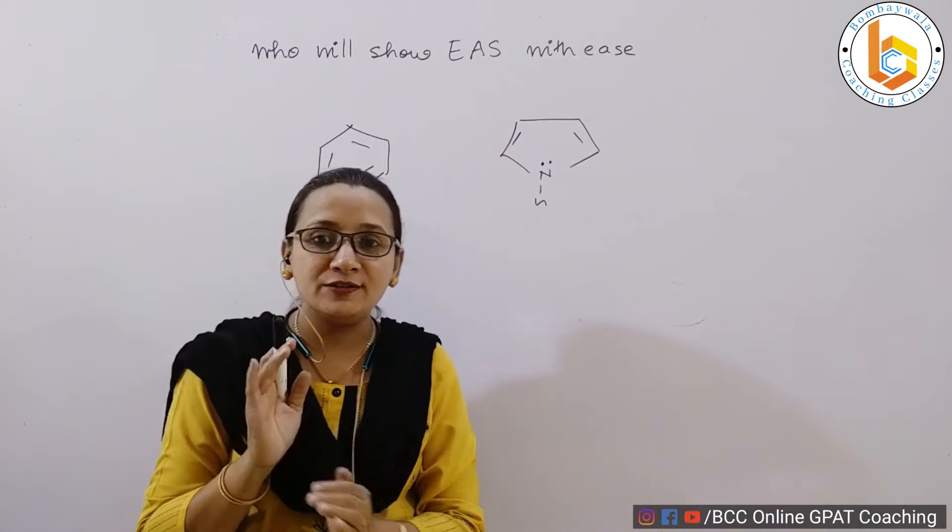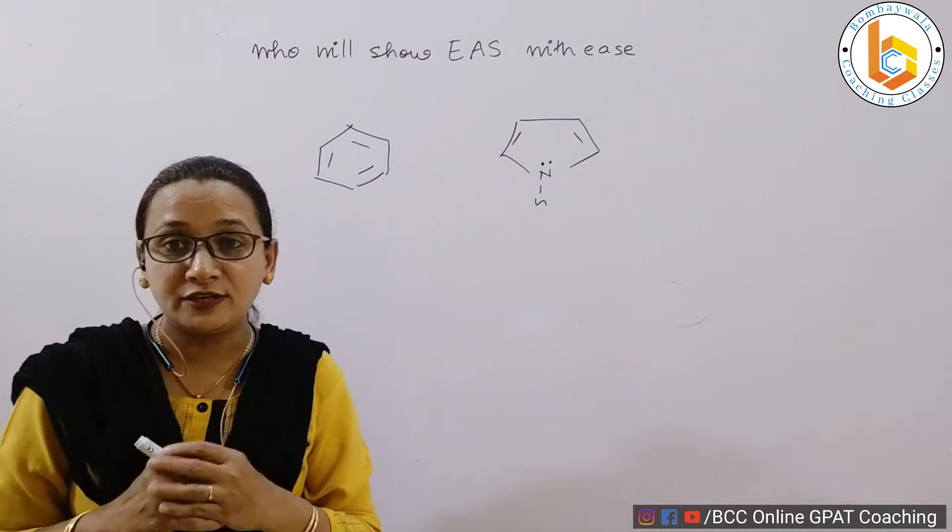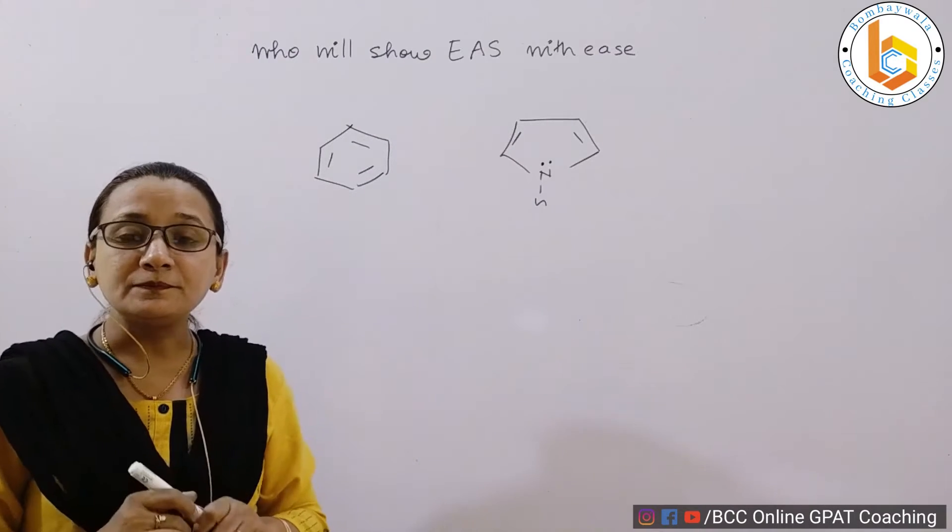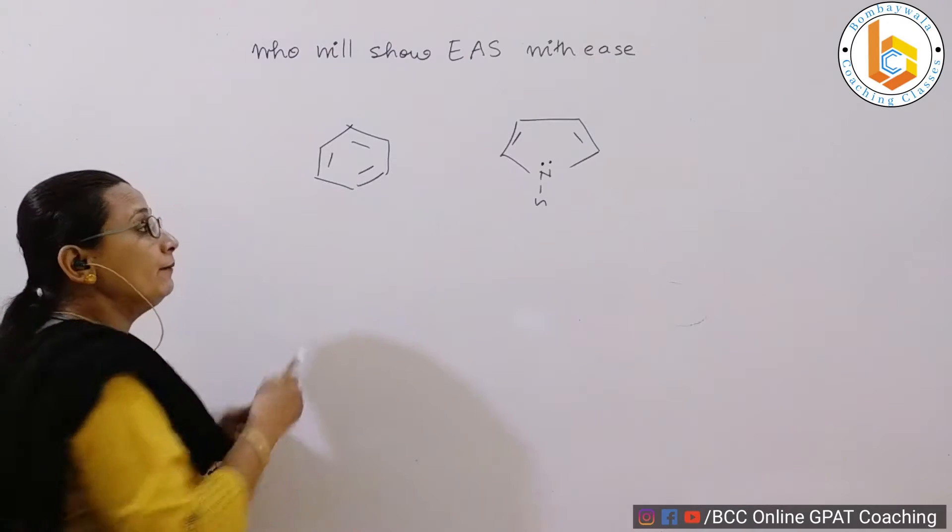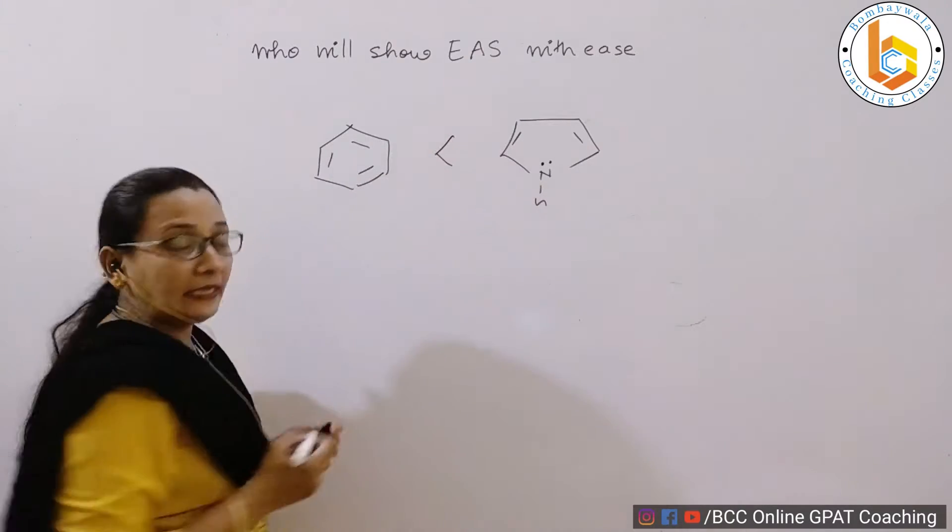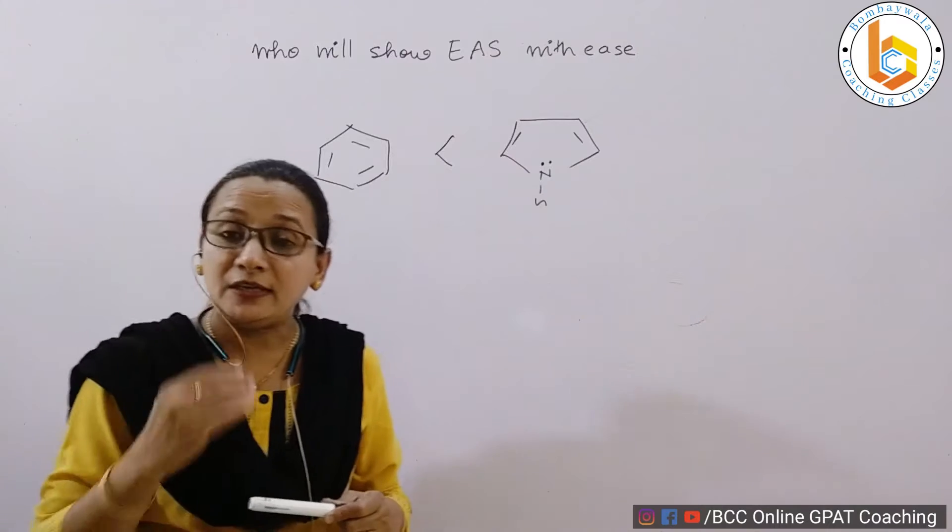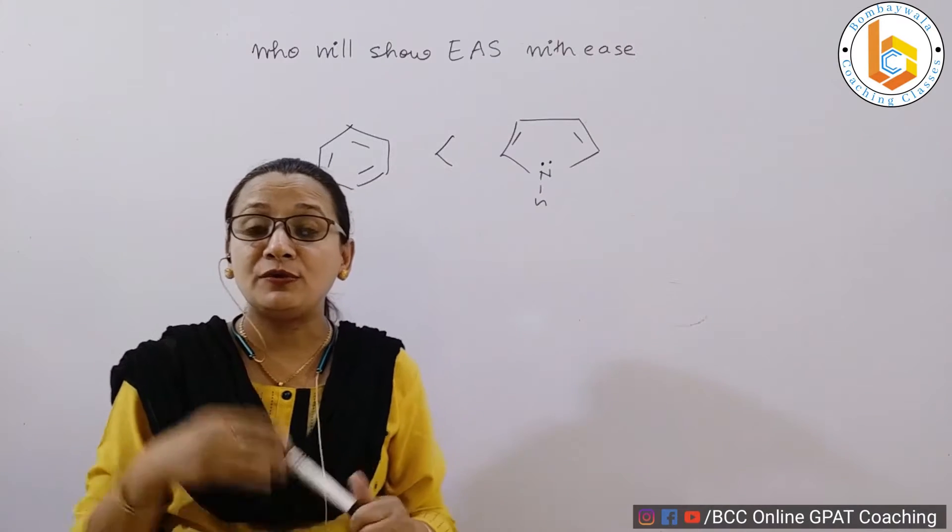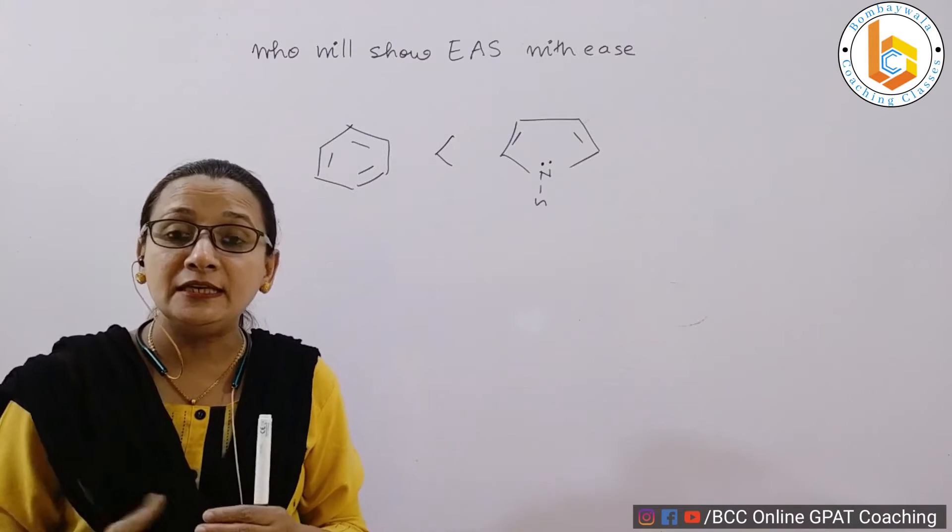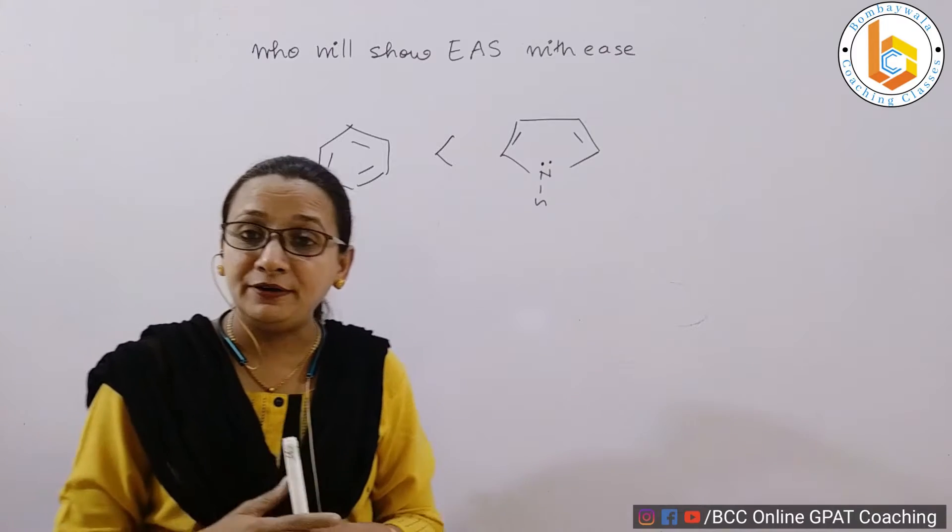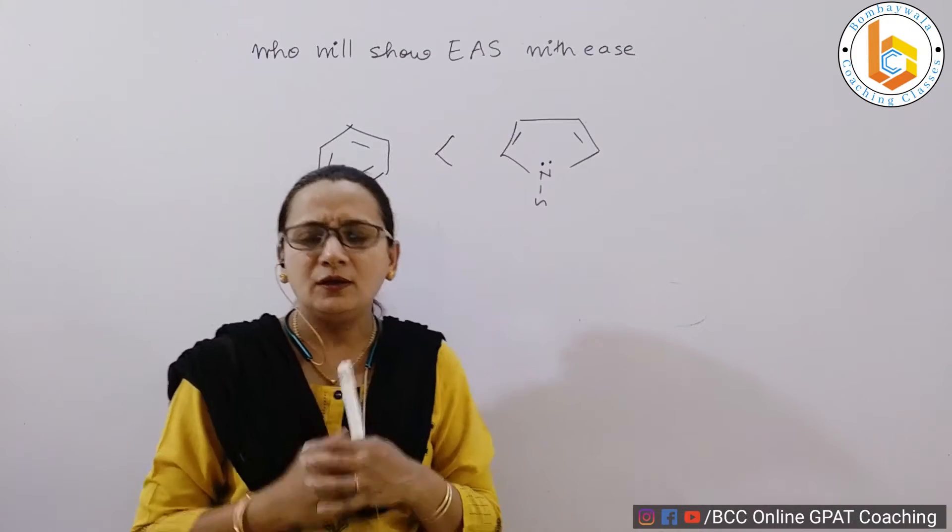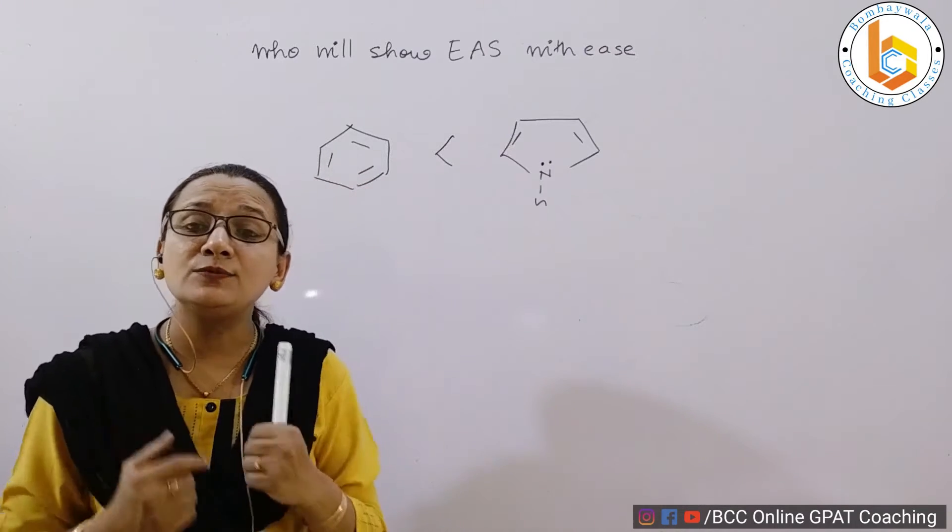Let me give you the answer first and then explain the reason for the same. Definitely pyrrole will show EAS with ease, electrophilic aromatic substitution. It will show the reaction easily or faster at a rapid rate. Question is why, why this will happen?